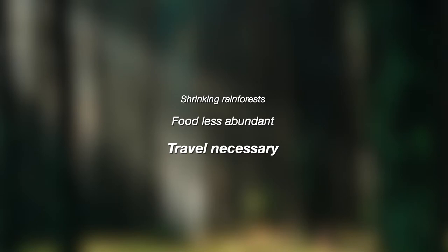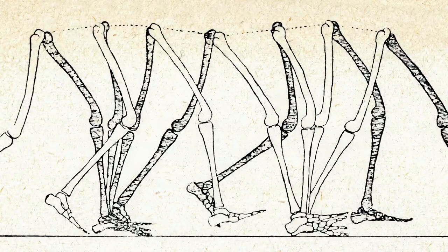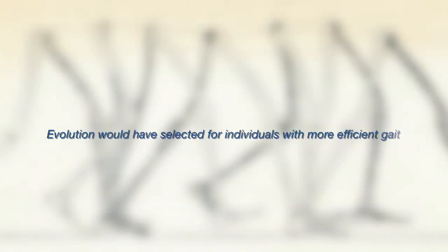These changes forced them to travel farther to get the same amount of food — a worthy introduction to the first key concept of gait biomechanics: that efficiency is crucial in evaluating gait biomechanics. Being able to travel farther more efficiently for a lower energy cost would have selected for individuals who could more effectively source food.